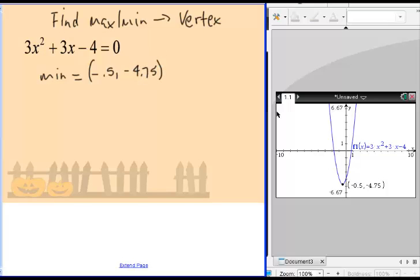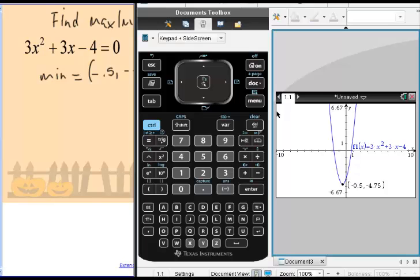That's all there is to finding a minimum value. If you want to find a maximum value, you take the same steps, but instead of choosing Minimum, you choose Maximum. It's really easy and gives us that vertex right away.